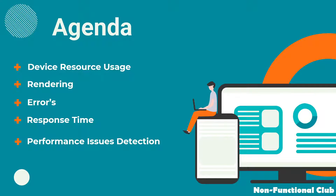Today we will cover different types of app performance matrices. We will look into what all device resource usage we should consider, then the rendering of screens, what type of errors we can consider for performance testing, then the backend checks with response time as our matrix, and finally how we can detect issues from the above matrices — how actual performance issues detection can be carried out. So let's begin.